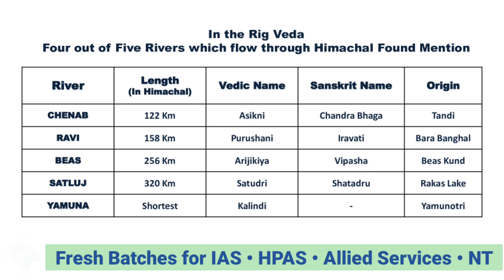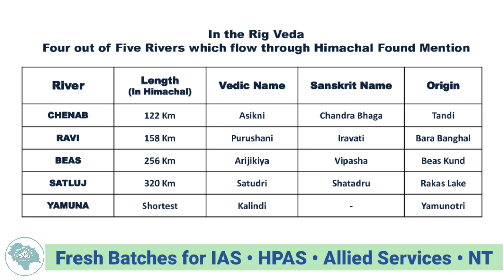Satlaj flows 320 km in Himachal, has the Vedic name Satudri and Sanskrit name Shatadru. Its origin is at Rakas Lake near Mansarovar. Yamuna's Vedic name is Kalindi. It is the shortest river in Himachal, and its origin is in Yamunotri, Uttarakhand.